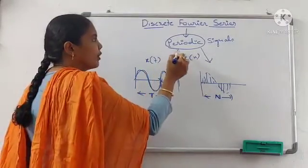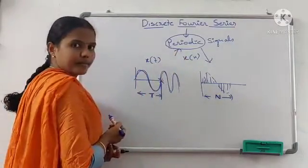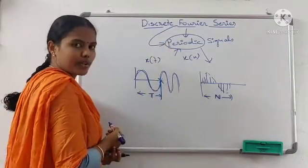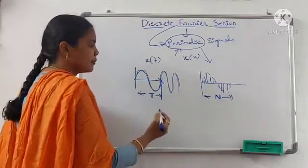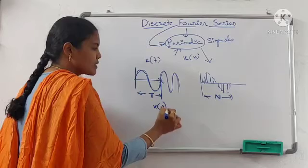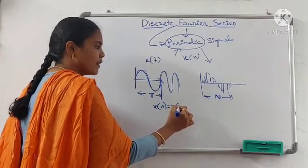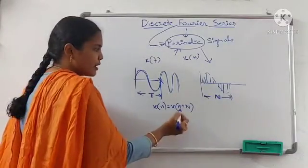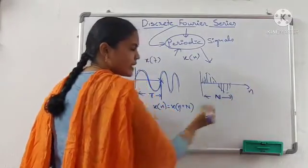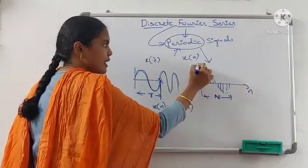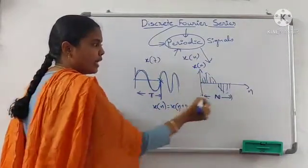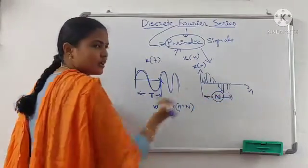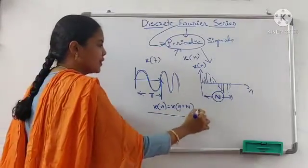So for periodic signals, we apply Fourier series. The condition for periodicity is x of n is equal to x of n plus capital N. Here, small n represents the x-axis, and y-axis is x of n. Capital N is the total interval of one cycle. This is the condition for periodicity.